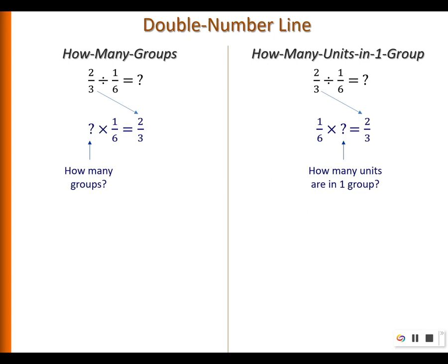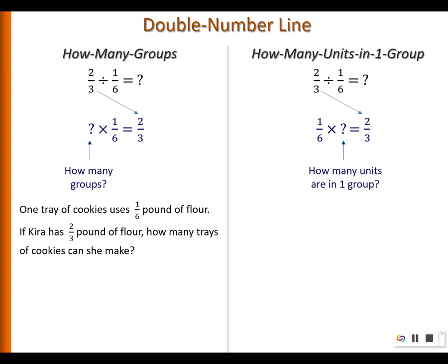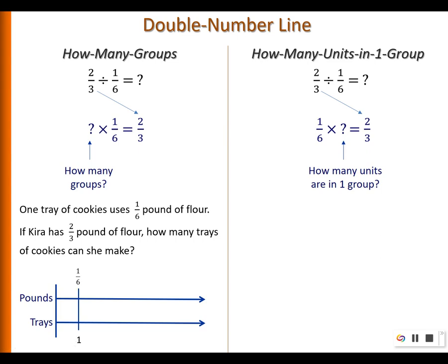Let's consider this problem: one tray of cookies uses 1/6 pound of flour. If Kira has 2/3 pound of flour, how many trays of cookies can she make? One way is to use a double number line to model it. One tray uses 1/6 pound of flour, so we can mark 1/6 pound and scale up to 1 pound, then determine exactly where 2/3 pound falls.